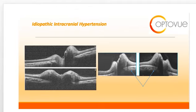On the right-hand side, you can see what we call an inward angulation of the peripapillary RPE Bruch's membrane layer, as illustrated by the blue arrows. This inward angulation does not occur in other causes of disc edema.